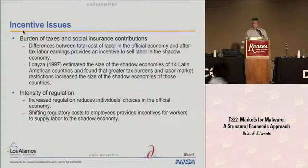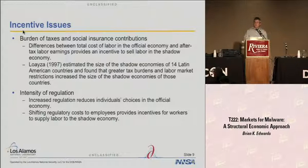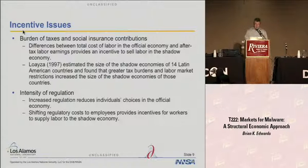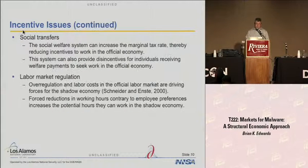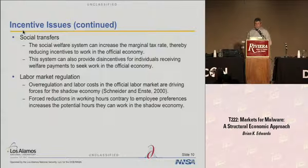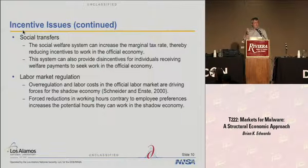Increased regulation reduces individuals' choices in the official economy, and so they're going to want goods and services. If they're not available officially, they will try to go outside and get them, and suppliers will find ways to supply these, albeit illegally. Shifting regulatory costs to employees provides incentives for workers to supply labor to the shadow economy. As far as social transfers are concerned — basically any kind of transfer payment from the government — social welfare systems can increase tax rates, reducing incentives to work in the official economy. The system can also provide disincentives for individuals receiving welfare payments to work officially.